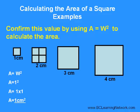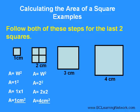Now, let's confirm this by using our area formula, A equals W squared. This time, our width is 2, so the area becomes 2 squared, which is 2 times 2. And we get an area of 4 centimeters squared.